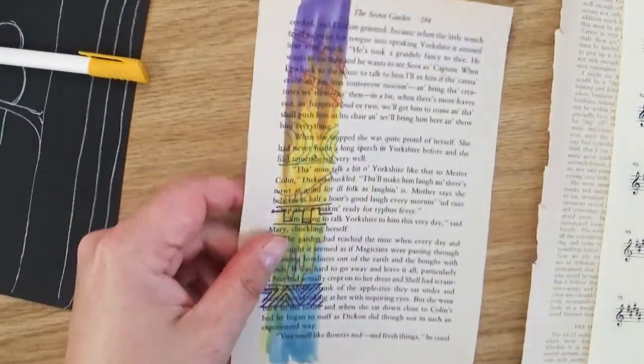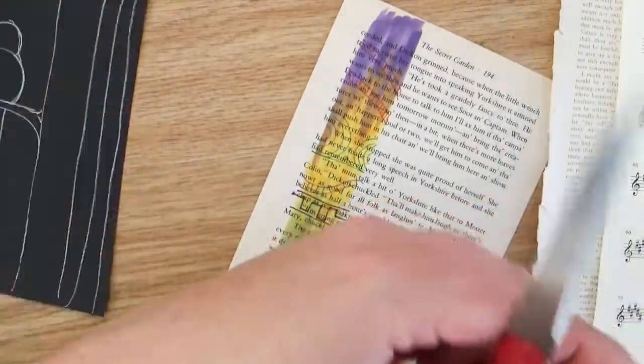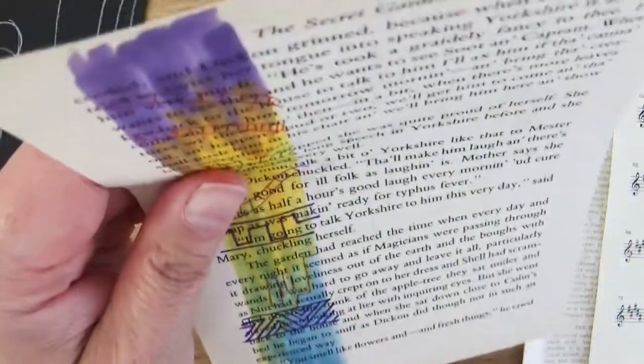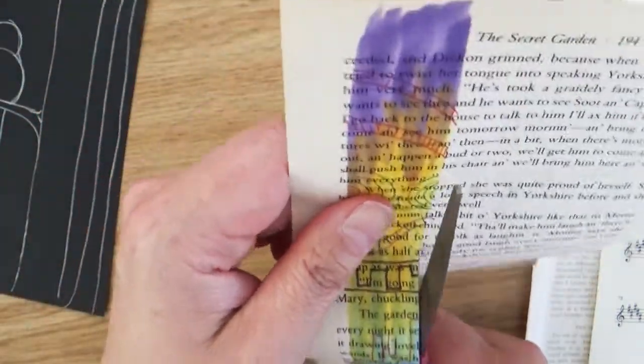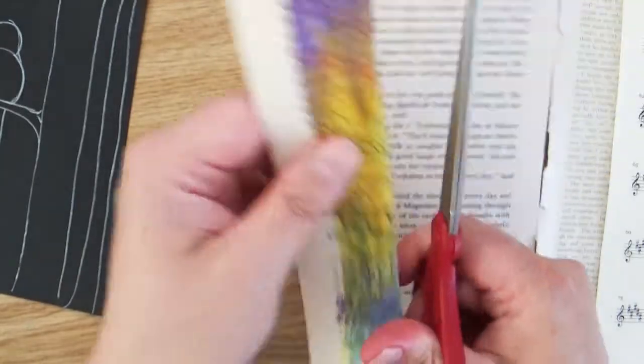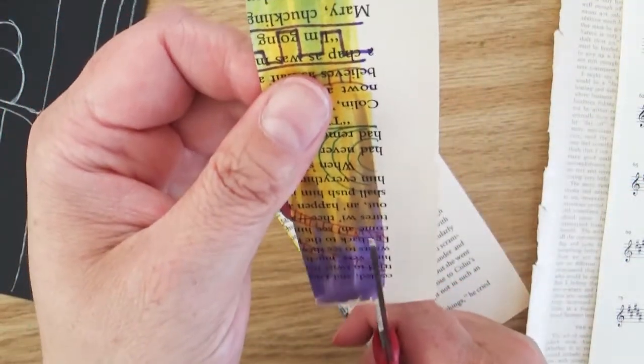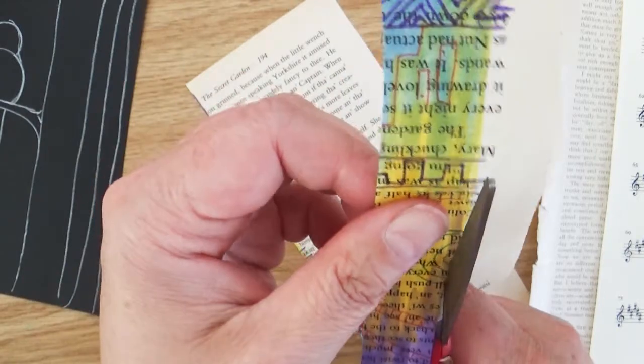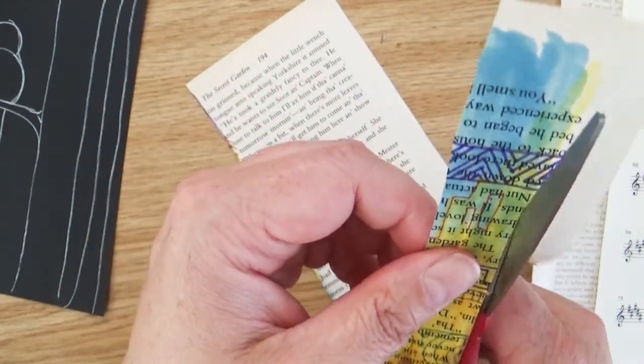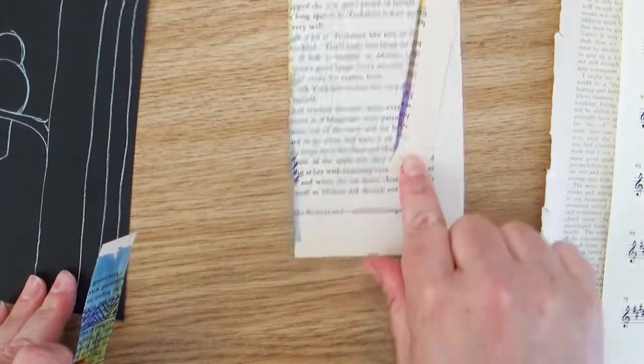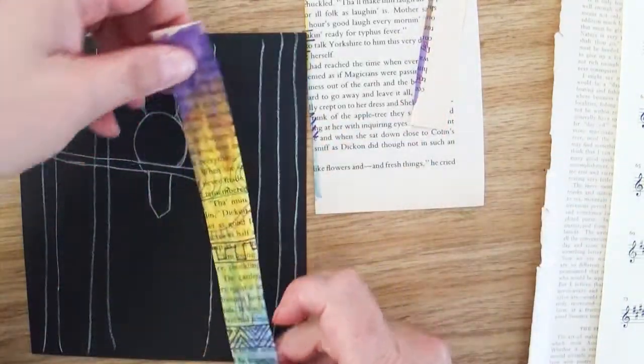Make sure that if you are using book pages that it's a book that is completely ruined already. We don't recommend taking books that are still usable and ripping them up and creating art with them. This was a book that had water damage and was not a happy book anymore. If you don't have a book that is heading for the trash bin, you can always try a newspaper.